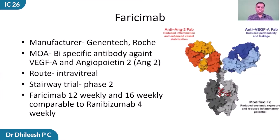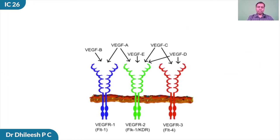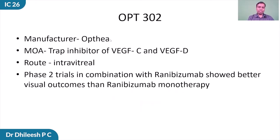Coming to other mechanisms of action: faricimab is a bispecific antibody against VEGF-A and angiopoietin-2. In the Stairway phase two trial, faricimab 12-weekly and 16-weekly regimens were comparable to ranibizumab 4-weekly in terms of visual outcome. When VEGF-A is inhibited, there is a possibility that other isoforms may be upregulated, acting on VEGF receptor 2 to cause the same pathological actions. This led to the development of OPT-302 by Opthea Pharmaceuticals, a trap inhibitor of VEGF-C and VEGF-D isoforms. Phase two trials in combination with ranibizumab showed better results compared to ranibizumab monotherapy.